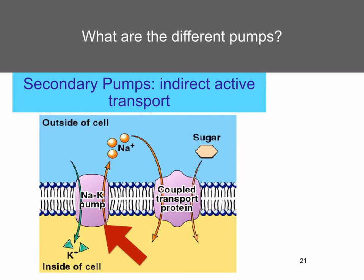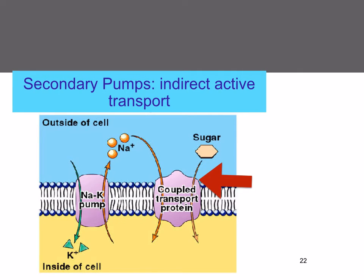Secondary pumps are also called indirect active transport. The primary pump is used to pump an ion out of the cell. This sets up a diffusion gradient through a co-transporter molecule. The diffusion gradient provides enough energy for the ion to pull another molecule with it through the co-transporter molecule into the cell. For example, with the sodium-potassium pump: sodium is pumped out, which creates a diffusion gradient. As sodium diffuses back through the co-transporter protein, it pulls sugar with it.